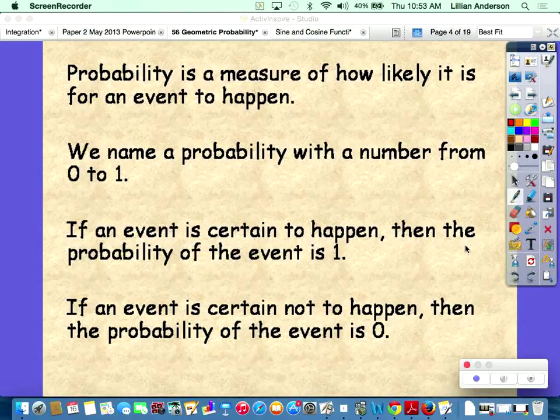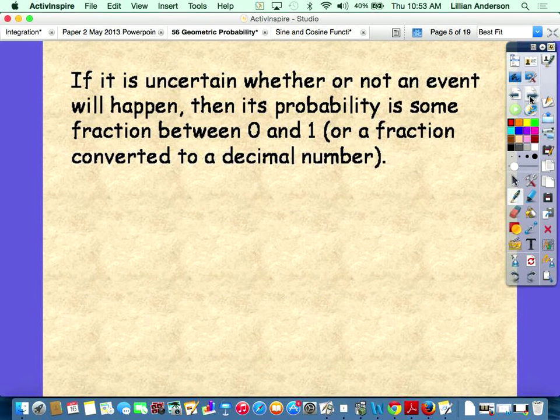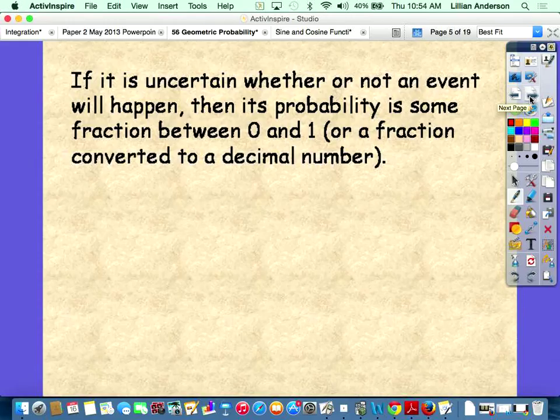If it's likely to happen, probability is 1. Not likely to happen is 0. If it is uncertain whether or not an event will happen, the probability is some fraction between 1 and 0. When you're talking about a percentage, that's when it goes from 0 to 100. You multiply your probability by 100%.